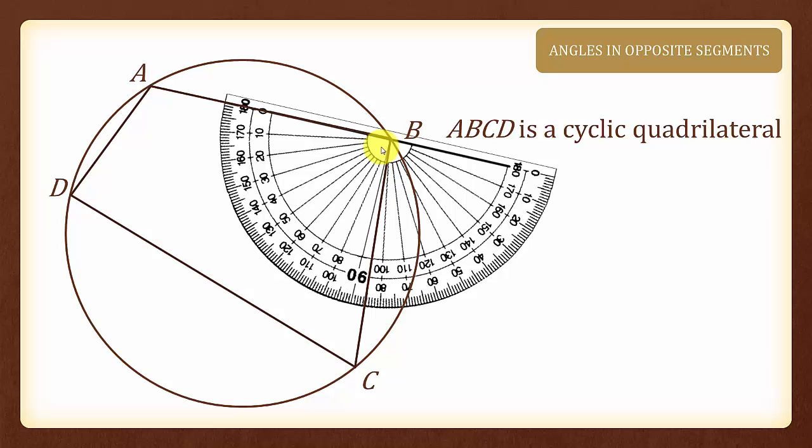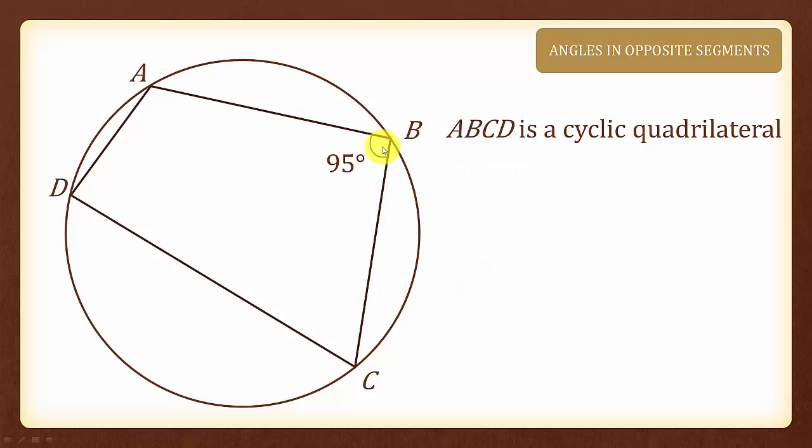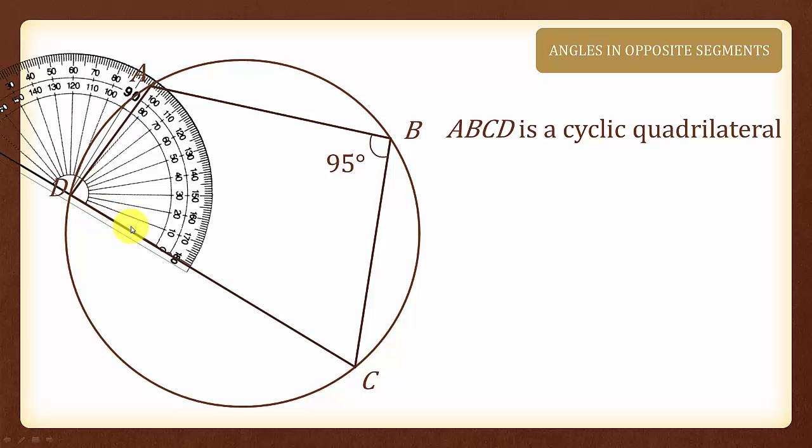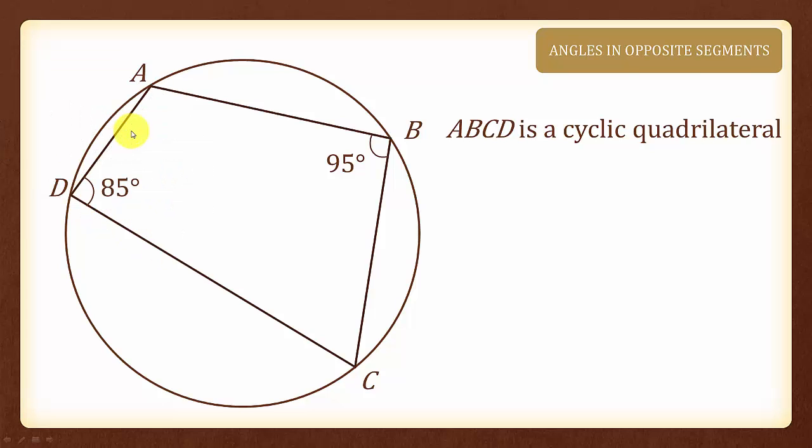We shall go on to measure angle B which will give us 95 degrees, and angle D to give us 85 degrees. Once again, do you notice anything about the opposite angles?